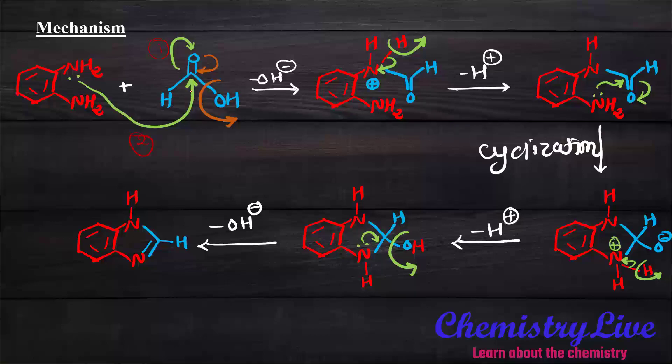The first step is to possess the inductive effect. Second step is attack of the lone pair of nitrogen to the carbon atom. Again, inductive effect diverts back and removal of OH minus occurs. So here it has a positive charge. Due to the positive charge, the bond of NH shifts towards the nitrogen atom and hydrogen is removed.